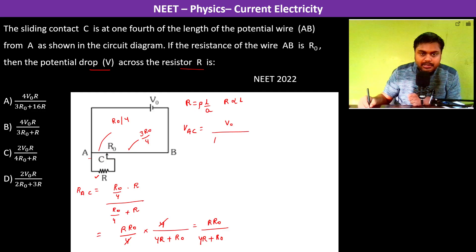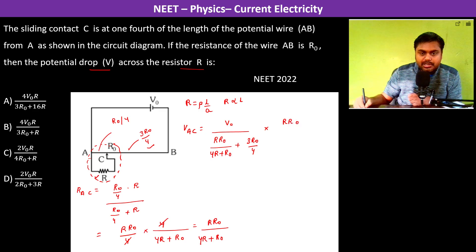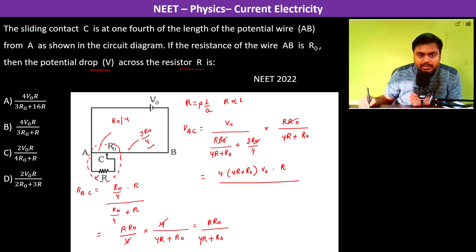So what is the current now? Current will be V0 R divided by R R0 by 4R plus R0 plus 3R0 by 4, because both of them are now connected in series. So 3R0 by 4 into the resistance of AC, this is R R0 divided by 4R plus R0. This is going to be equal to, R0 is gone, now this 4, so 4 into 4R plus R0 into V0 into R divided by we have 4R plus 12R plus 3R0.